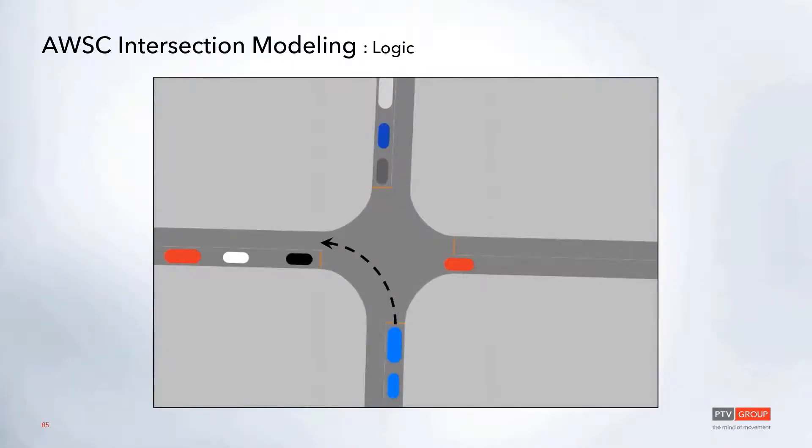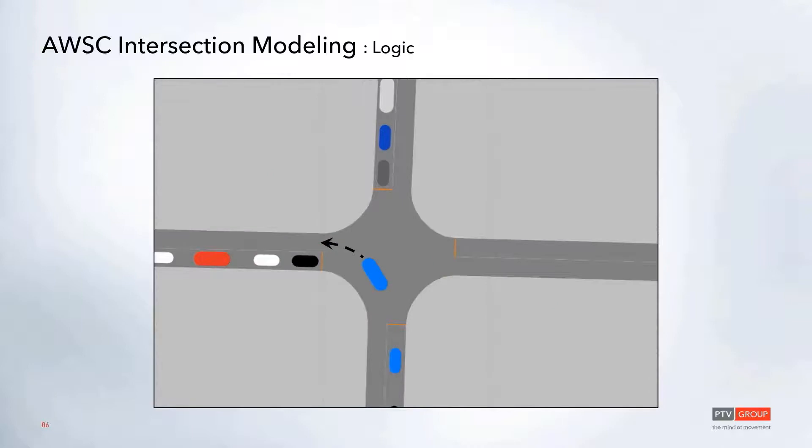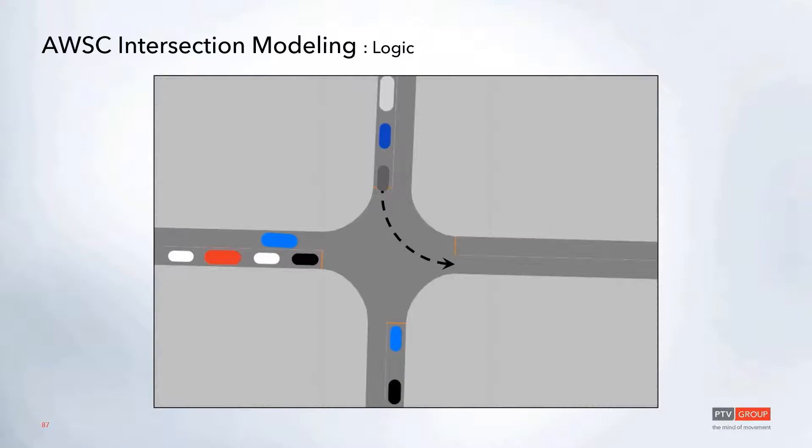For example, if we have this vehicle here making a left-hand turn, this vehicle is going to check and make sure that the last vehicle has cleared its connector, which in this case it has, and that the downstream link has available space. And since both of those are okay, that vehicle will start to advance. And then once that vehicle has met its connector conditions, that next vehicle will be allowed to go. In this case, I had that connector occupancy value set to one, so these vehicles are just making sure that the previous vehicle has completely left that other connector.